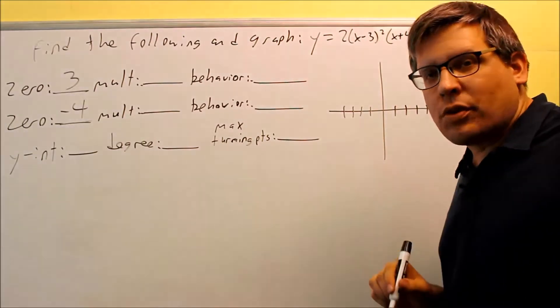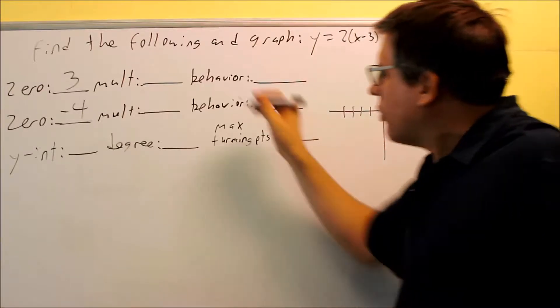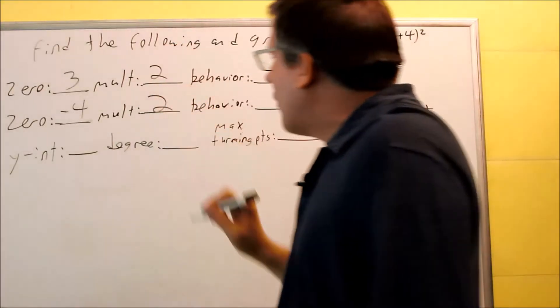Next, you want to indicate the multiplicities. So multiplicities for each one of these, there's 2s on both of those. So now we have that.